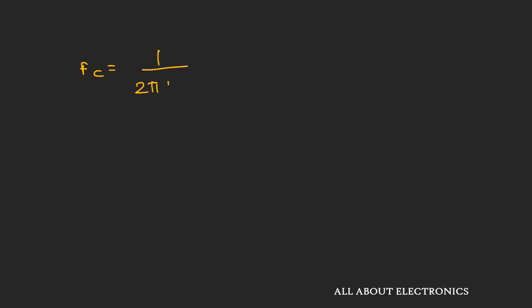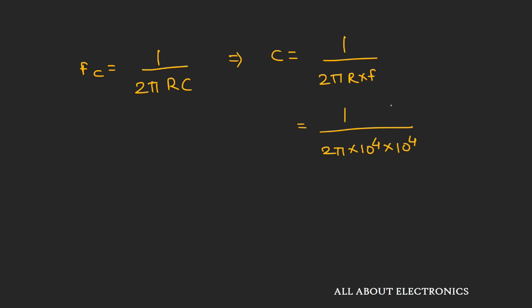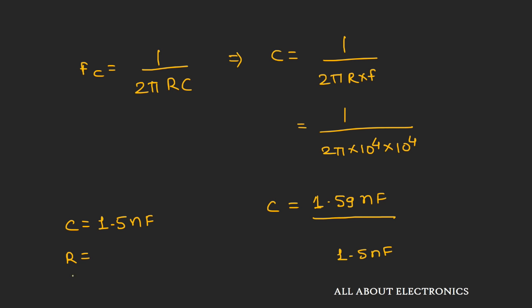The cutoff frequency fc = 1/(2πRC), so capacitance C = 1/(2πRf). Substituting R = 10 kΩ and f = 10 kHz, we get C = 1.59 nF. Since 1.5 nF is a readily available capacitor and is very close to 1.59 nF, we take C = 1.5 nF. Using R = 10 kΩ and C = 1.5 nF, the resulting cutoff frequency is 10.61 kHz, which is slightly greater than required.